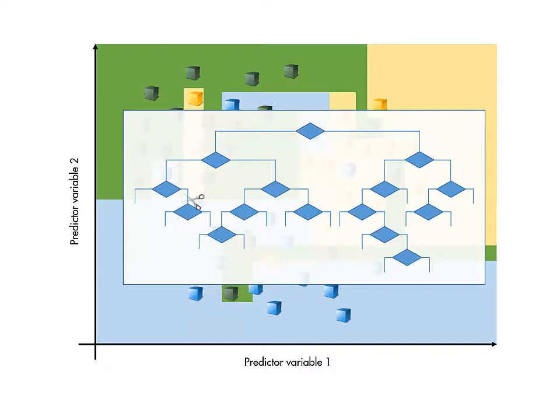You can prune a tree, that is, reduce the number of splits, to create a simpler model that may have a higher resubstitution loss, but better generalization to new data.